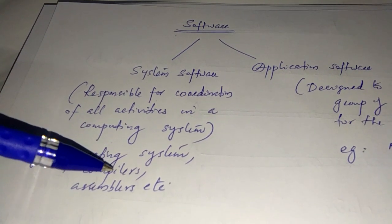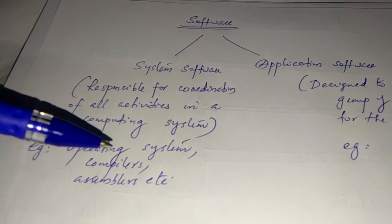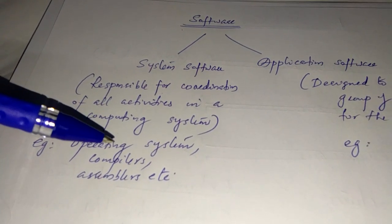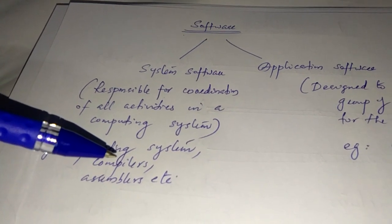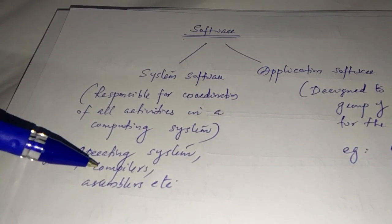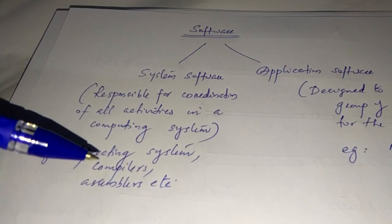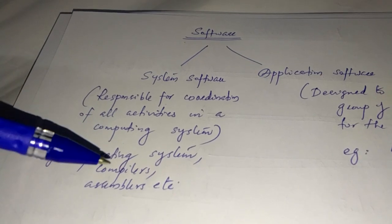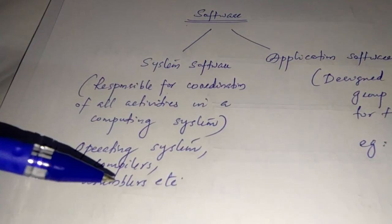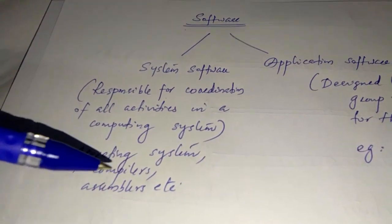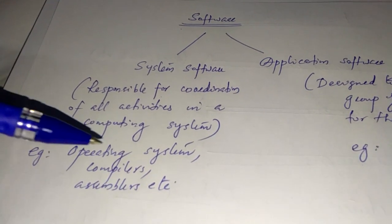Another duty of the compiler is: we have written the application program in a high-level language, for example Python, C, and Java, which are high-level languages. These have an English-type structure. But the computer does not understand such languages — it can understand only zeros and ones. So whatever we type has to be converted into the language of zeros and ones, which is called machine language or binary language.